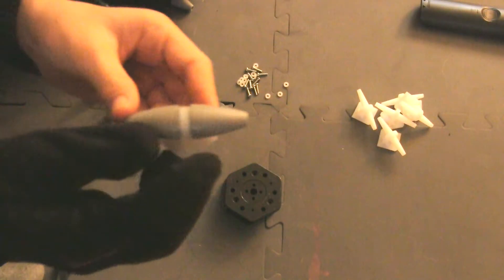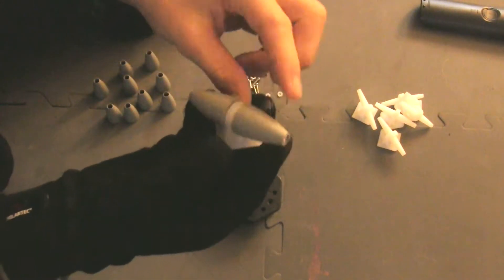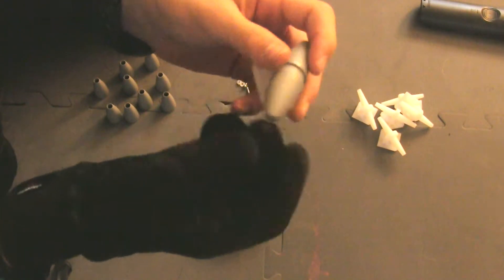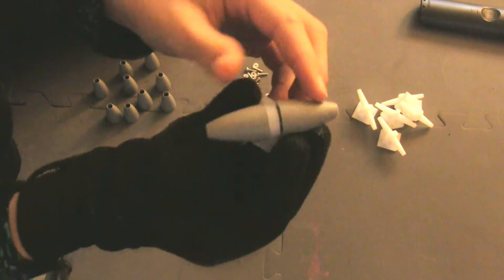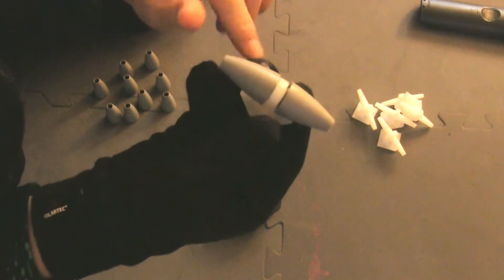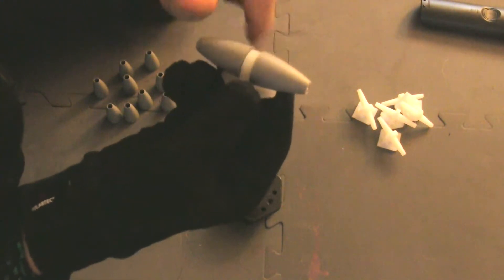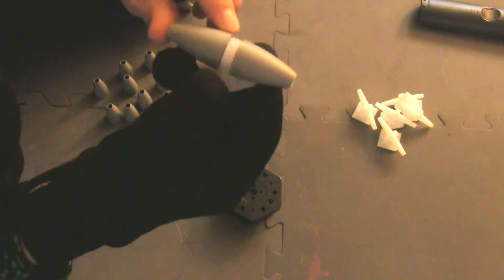So after you have attached two of the part twos to one of the part ones, it should look like this. They should both be able to spin freely. Now what we're going to do is we're going to make five more of these, guys. So hang in there. Again, just don't rush, and it should go fine.